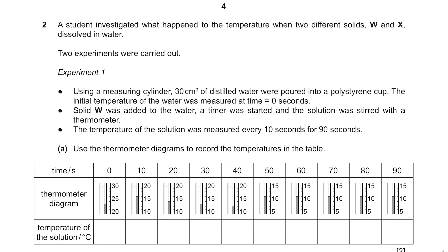A student investigated what happened to the temperature when two different solids, W and X, dissolved in water. Two experiments were carried out. In experiment one, 30 centimetres cubed of distilled water was poured into a polystyrene cup using a measuring cylinder. The initial temperature of the water was measured at time zero. Solid W was added to the water, a timer was started, and the solution was stirred with a thermometer. The temperature was measured every 10 seconds for 90 seconds.